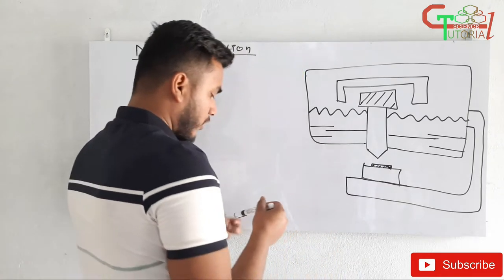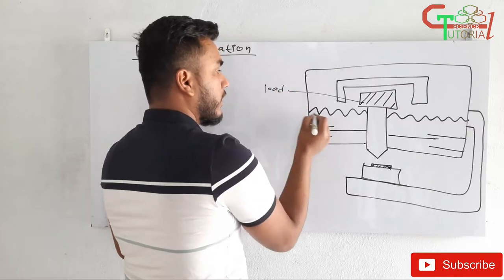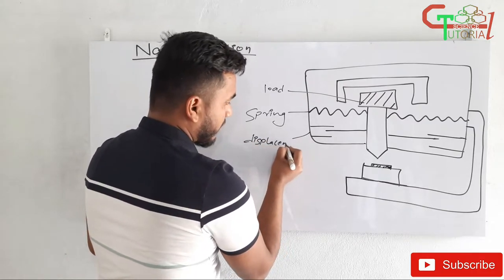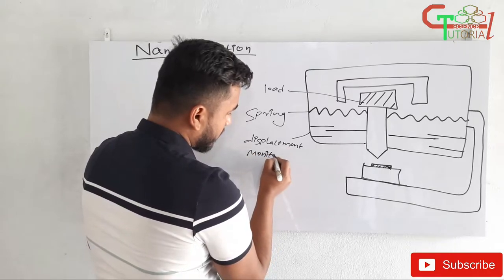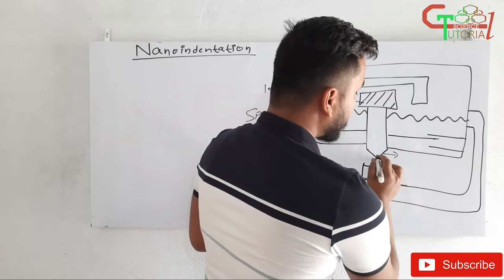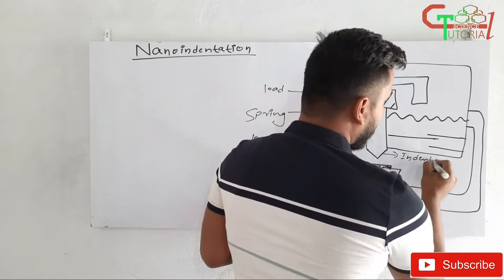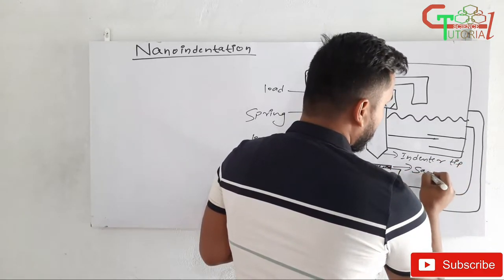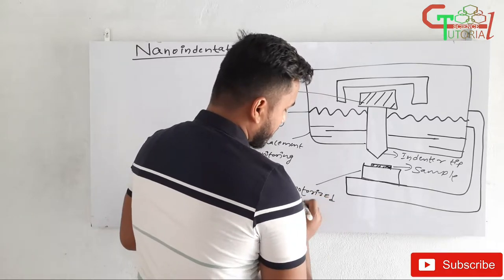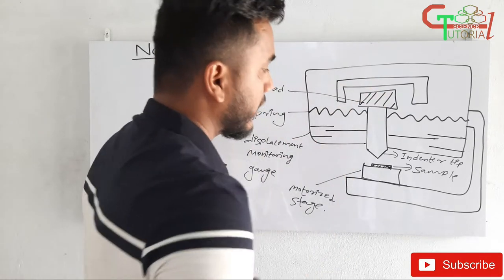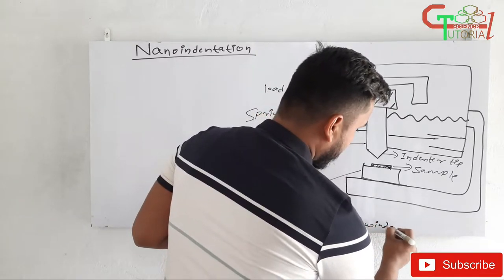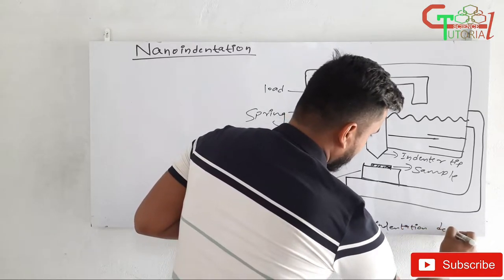Now let me write the names of all the basic components. This is the load, this is the spring, this is the displacement monitoring gauge, and this is the most important part — the indented tip. Here is the sample, and this one is the motorized stage. So this is the complete figure, and its name is the nano indentation device.